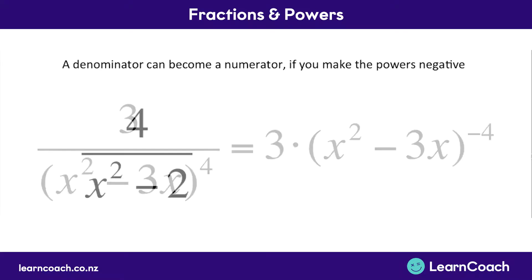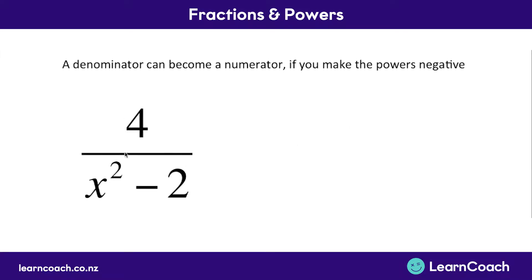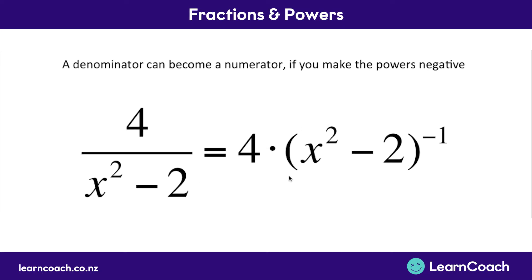But what happens when we get a fraction? Well, we have one power on the bottom, but not another power on the bottom. You have to make the whole denominator to the negative power. So in this case, you'd take the whole denominator, you'd put it in brackets, and the whole thing is to the power of negative 1. And so you'd have the 4 at the top multiplied by the denominator to the power of negative 1.